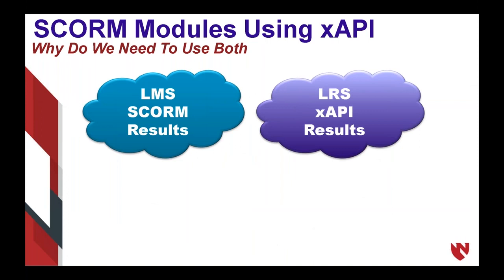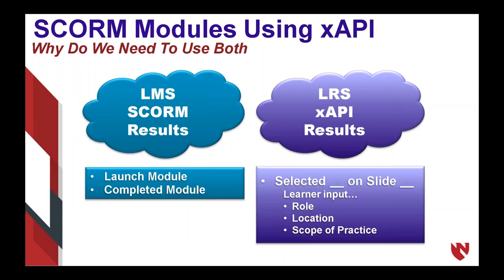With LMS and SCORM, your typical results are: the person launched the module on this date and completed it on this date — we've done that for years. What we're gathering from LRS and xAPI is more of the granular stuff that's really exciting. This first year was almost a proof of concept for our organization, and then we'll be able to grow from this simple example of using xAPI.